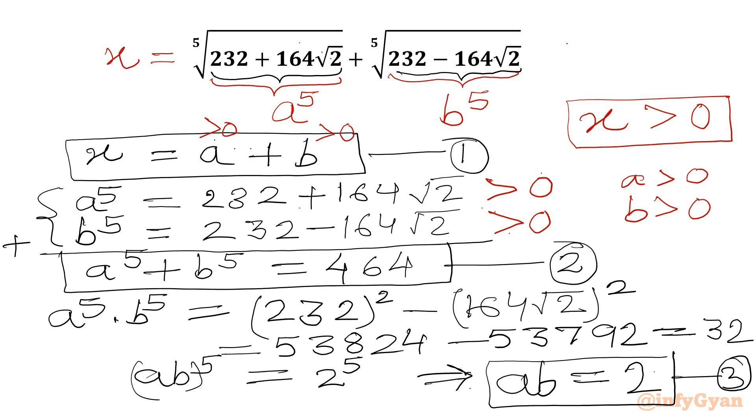Let's solve this system of equations. So I will write our first equation: A plus B equal to X. Second equation: A power 5 plus B power 5, this value was 464. And third equation: AB equal to 2.